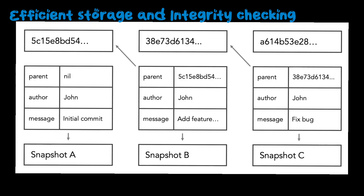To ensure consistency and reliability, Git does integrity checking. Git uses cryptographic hashes to ensure the integrity of data. If someone modifies a file, Git can detect the changes by comparing the hash of the modified file with the stored hash.